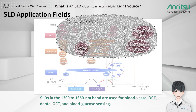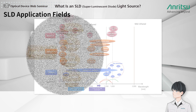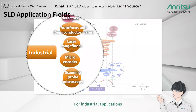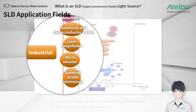SLDs in the 1300 to 1650 nanometer band are used for blood vessel OCT, dental OCT, and blood glucose sensing. For industrial applications, short wavelength SLDs are used for micro encoders and scanning probe microscopes.